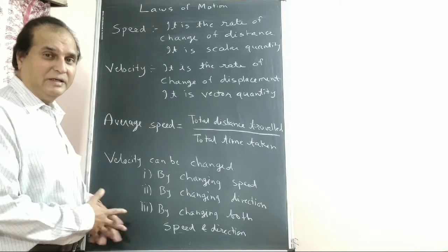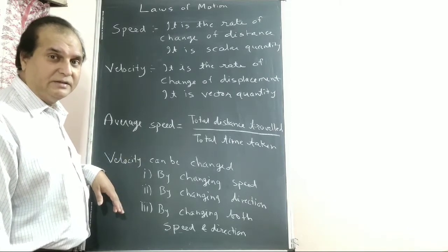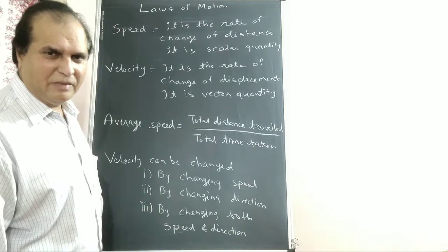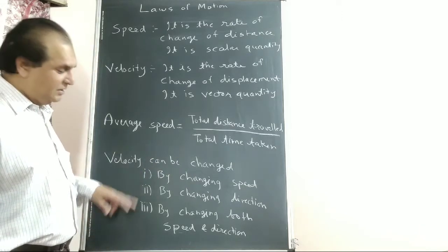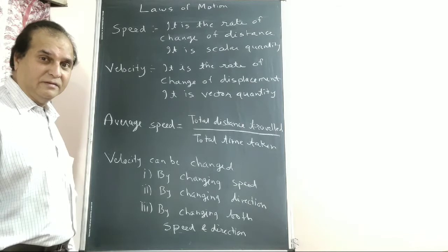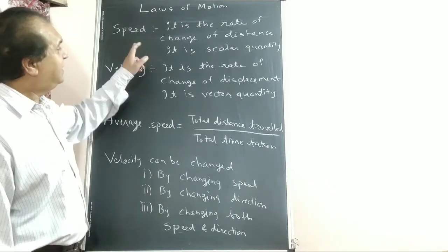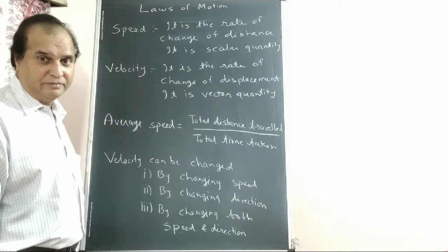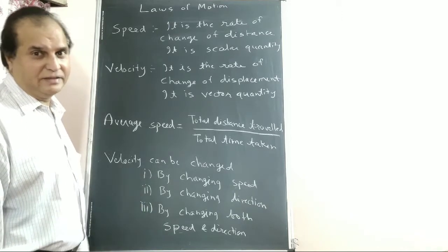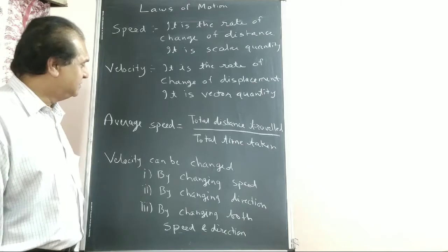I will explain the units after you understand the basic concepts — standard SI units and CGS units. So speed can be changed by going slow or fast. But how can velocity be changed? Important question: by changing speed, by changing direction, or by changing both speed and direction — as velocity is a vector quantity, it depends on both magnitude and direction. Speed depends only on magnitude, but velocity depends on magnitude as well as direction.